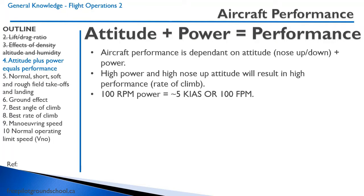There's an approximation that every 100 RPM of power equals 5 knots indicated airspeed or 100 feet per minute rate of climb. It's not exact, but it's surprisingly accurate. So if you want to increase your rate of descent by 200 feet per minute, just pull off 200 RPM of power while maintaining the same airspeed, and it should work out pretty close.